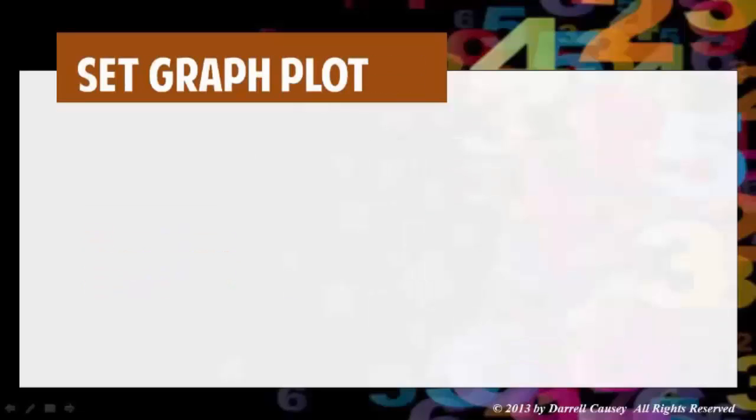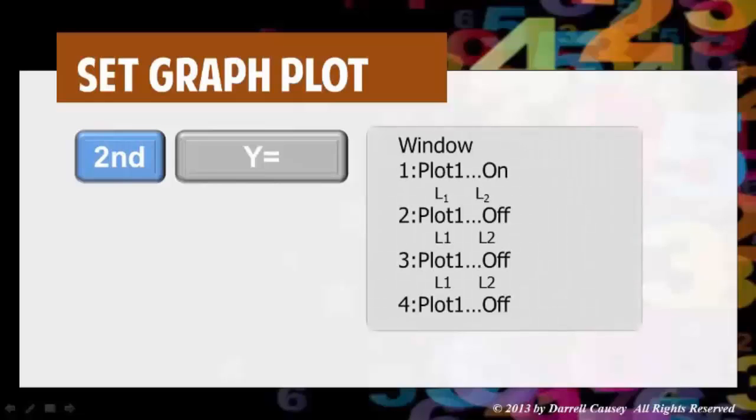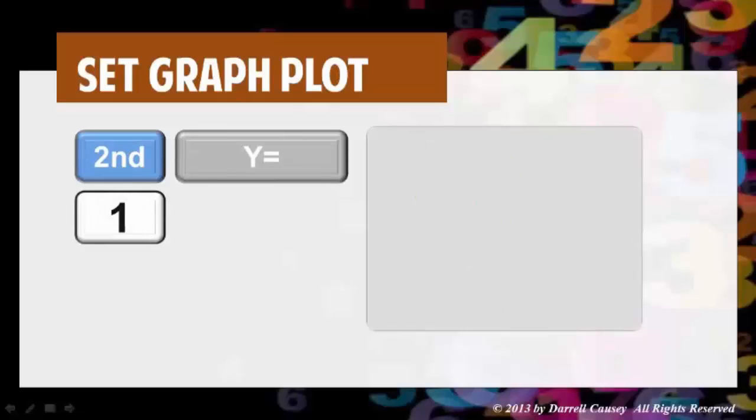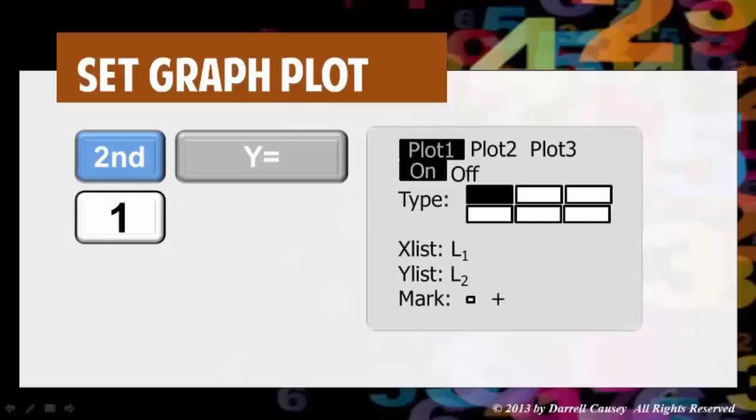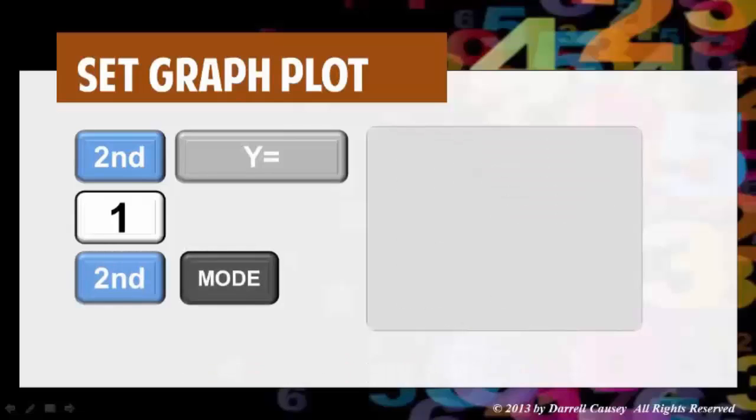Set your graph plot. So push 2nd y equals and you want to make sure that 1 is on. And if it's not, you need to press enter and make sure that on and L1 and L2 are selected. Alright, there it's on. And that's the type of graph I want. And that's the marking I want to use. And 2nd mode and I'm back.